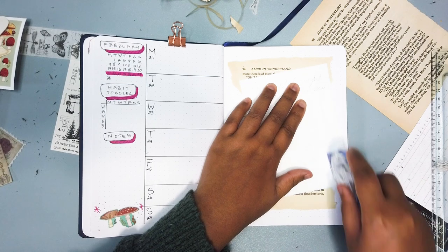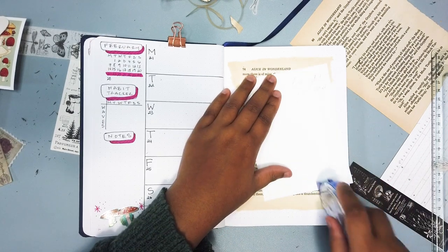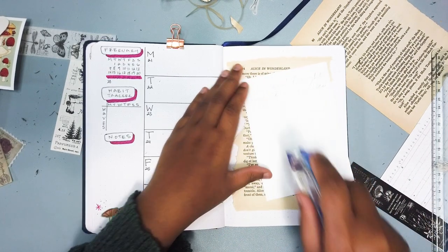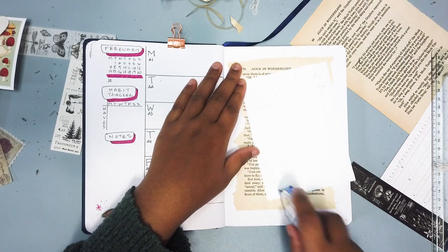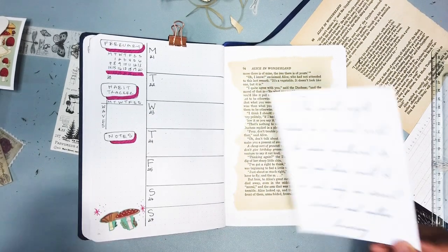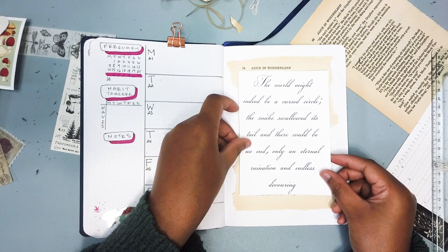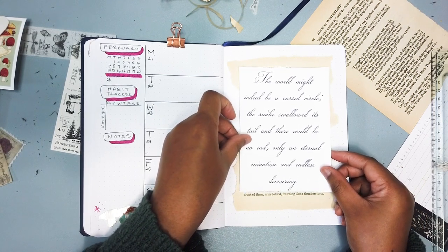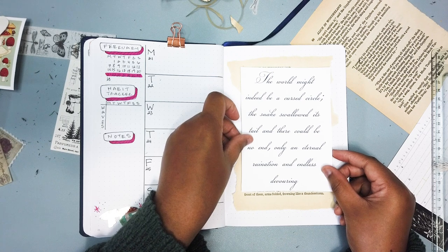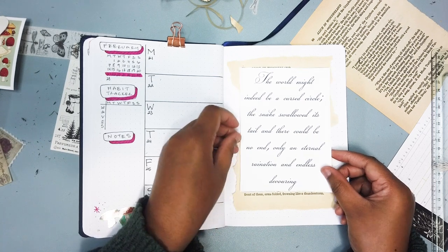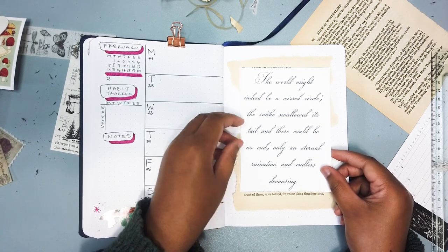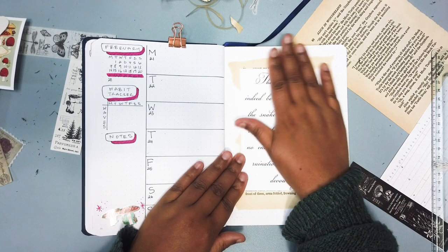So I ended up just like printing it out from my printer and sticking it on a stiffer piece of paper. The quote from Mexican Gothic is: The world might indeed be a cursed circle, the snake swallowed its tail and there could be no end, only an eternal ruination and endless devouring.